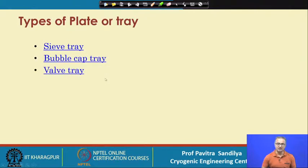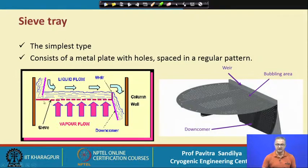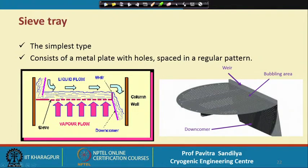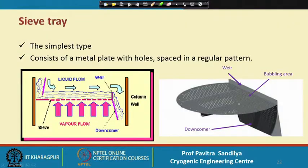There are various types of trays. The sieve tray is the simplest — it consists of a tray with sieves or holes through which the vapor comes out, while the liquid passes over the plate. The liquid does not come out through the holes because we maintain enough vapor pressure to prevent that. If the vapor flow rate decreases too much, the liquid may come out through the holes — that is the situation we want to avoid. Here is a real-life sieve tray showing the weir, the downcomer, and the holes on the sieve plate.